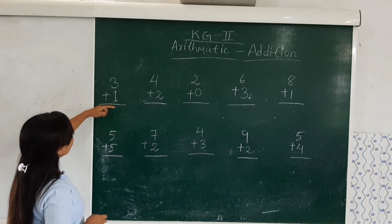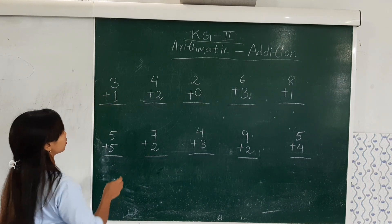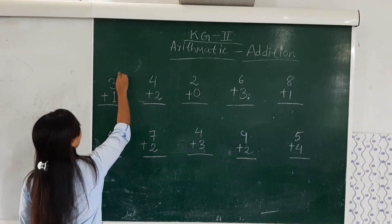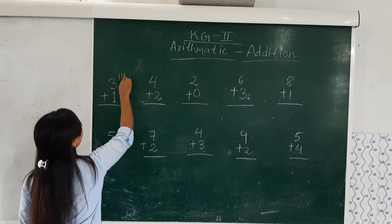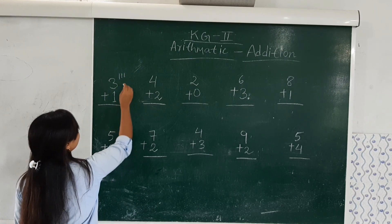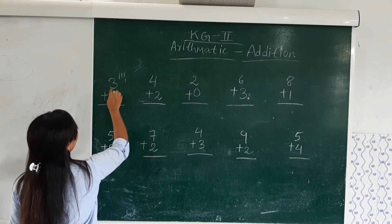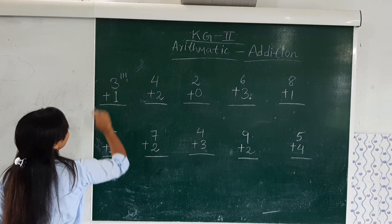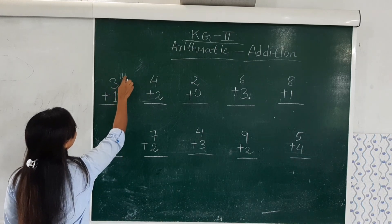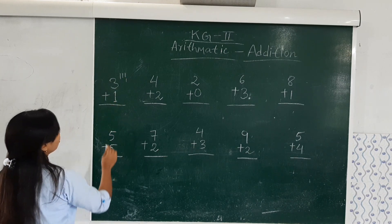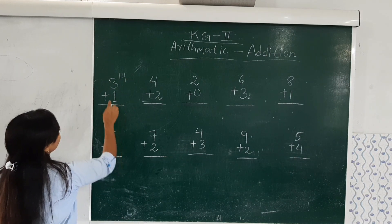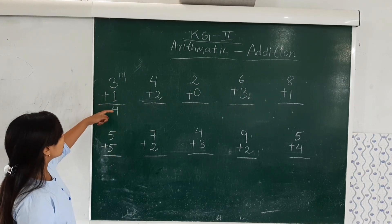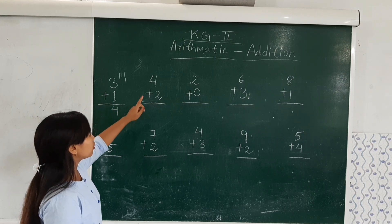Now how do we find the result of these two numbers? I will show you the process. Here we have 3, so we will make 3 marks: 1, 2, 3. Here we have 1, so we mark 1. Now to find out 3 plus 1, we count all together: 1, 2, 3, 4. So the result is 4. 3 plus 1 is 4.